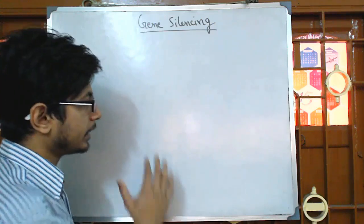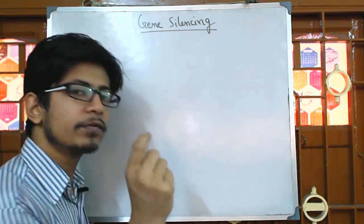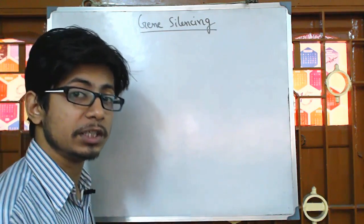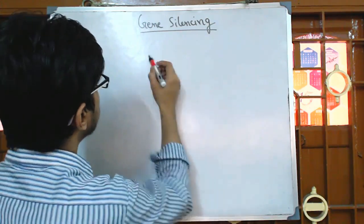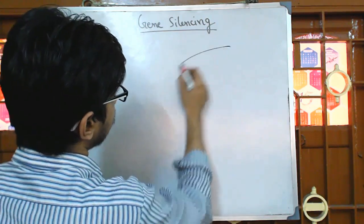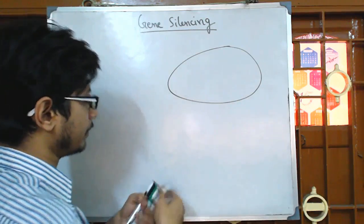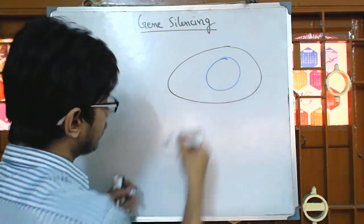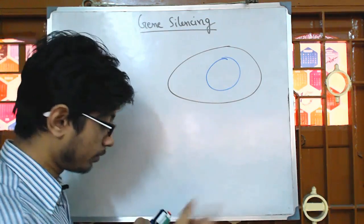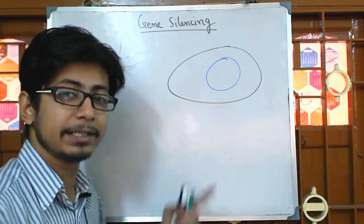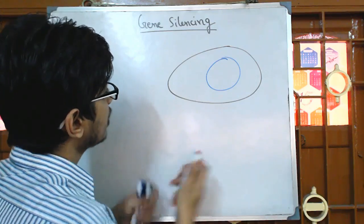So why do we require to block or silence the expression of a specific gene or specific DNA segment? Let us assume this is a eukaryotic cell. Inside this cell, we have a nucleus. Inside the nucleus, we have the chromosome. In the chromosome, we have the DNA, and part of the DNA acts as a gene.